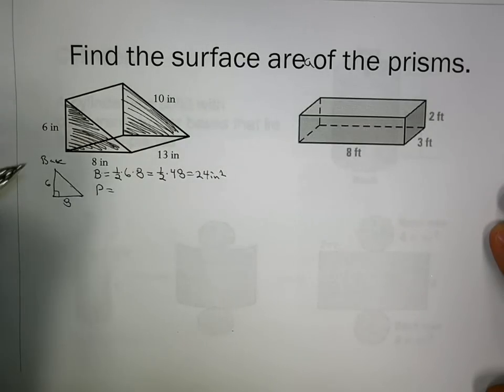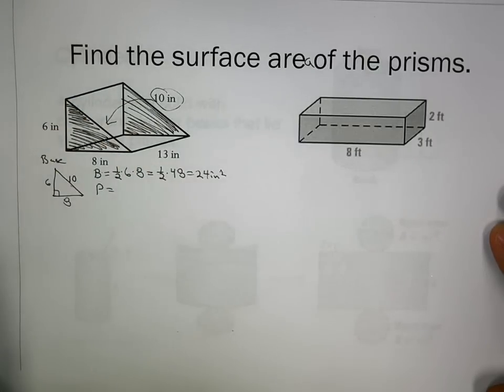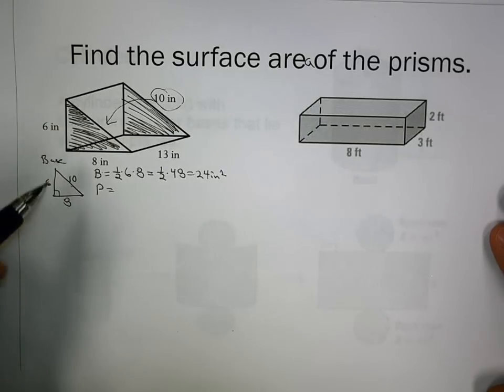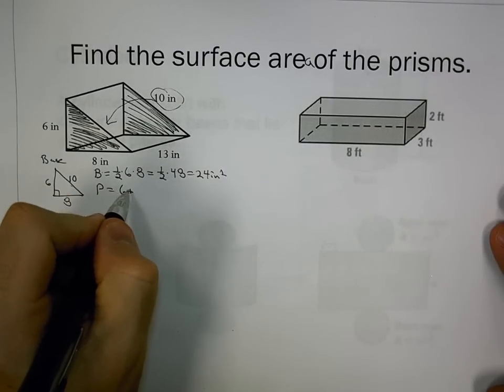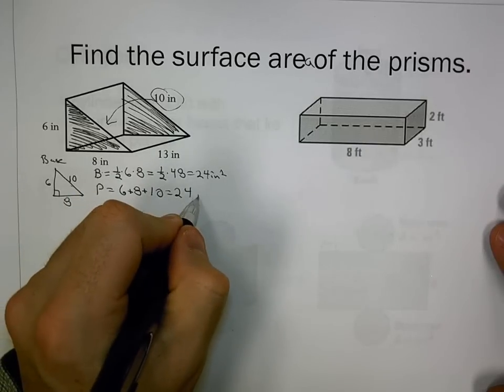The perimeter is 6 plus 8 plus the hypotenuse. They didn't give it directly, but we can see it's 10. If they didn't give you that value, you could use Pythagorean theorem. The perimeter is 24 inches.